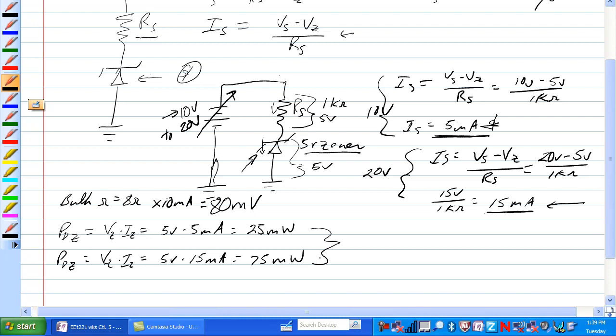The data sheets for this subject have a maximum power dissipated, they also have a maximum current through the Zener, also listed, and they should fairly well line up with each other.